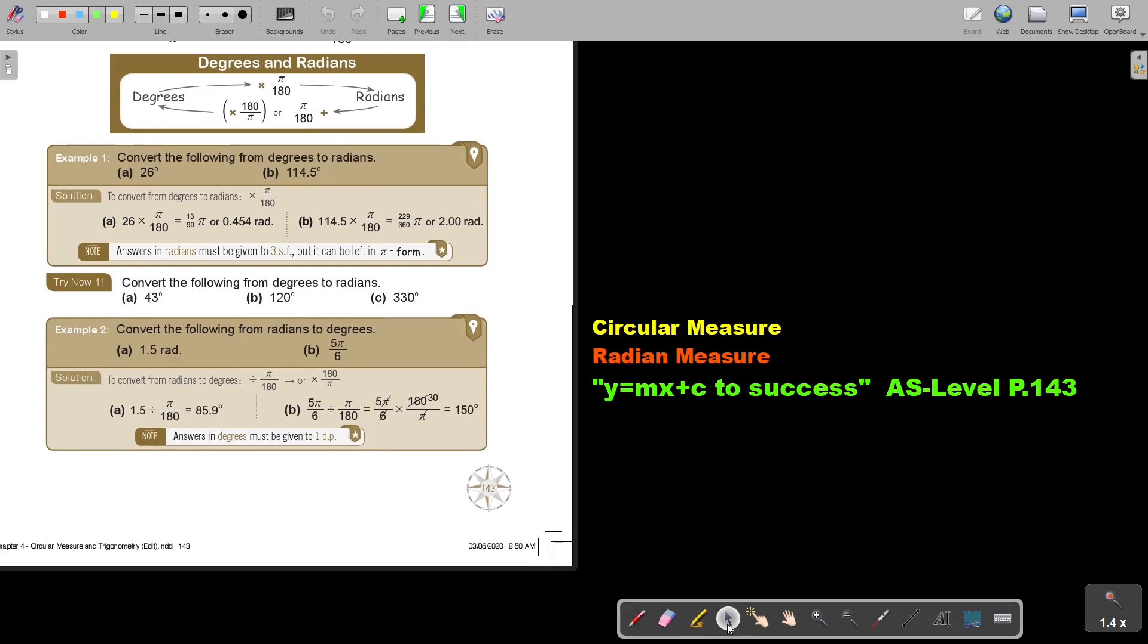So convert the following, it's 1.5. If you take your calculator and press 1.5, divide - it's very good to have a bracket - so shift π divide 180, put it in a bracket, close, and I get 85.9 degrees.